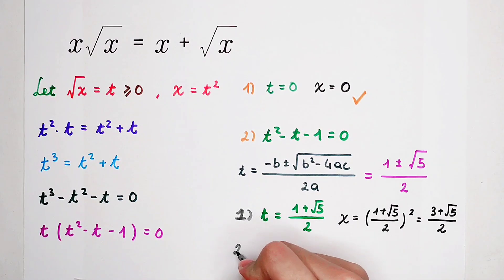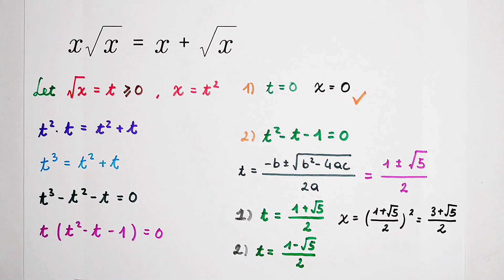For our second case, of course, t is equal to 1 minus square root of 5 divided by 2. You know that t is always non-negative. However, in this case, t is negative. So, it doesn't work.